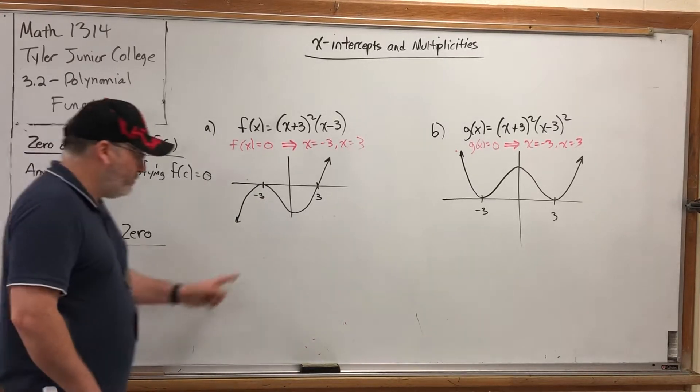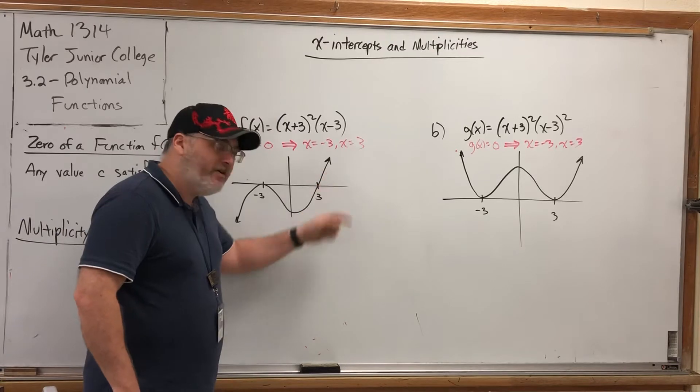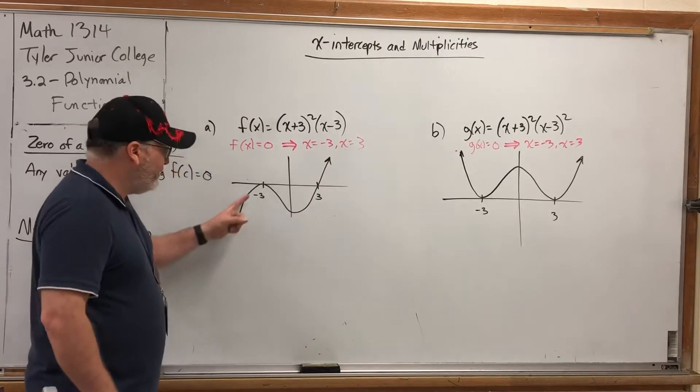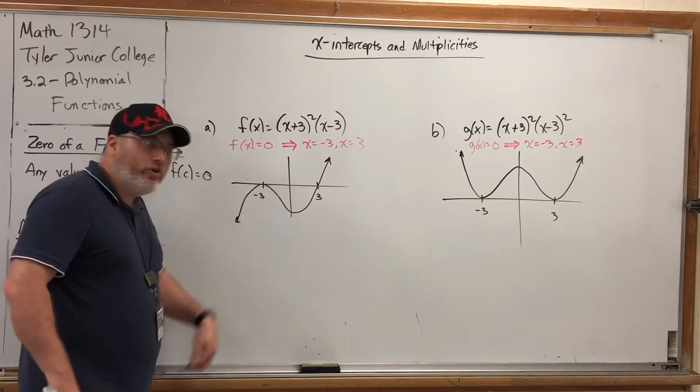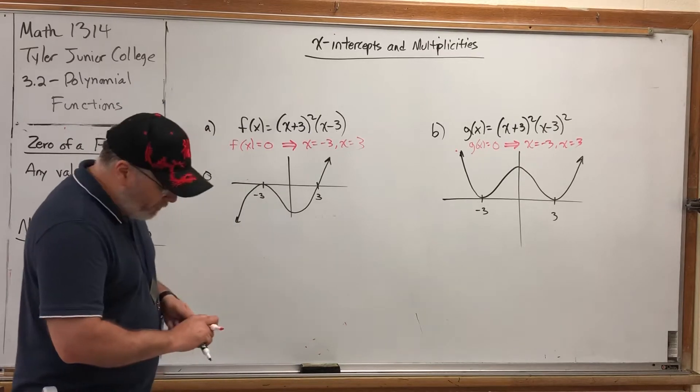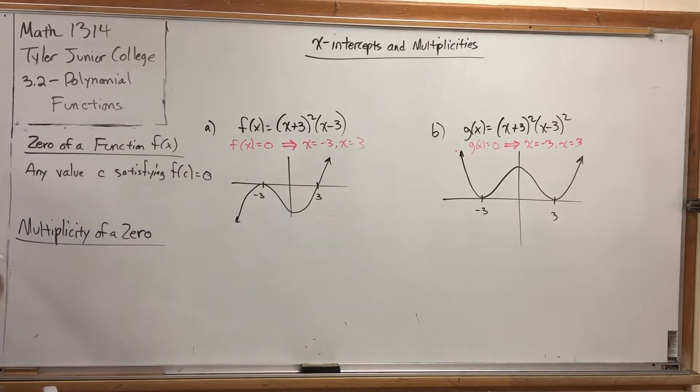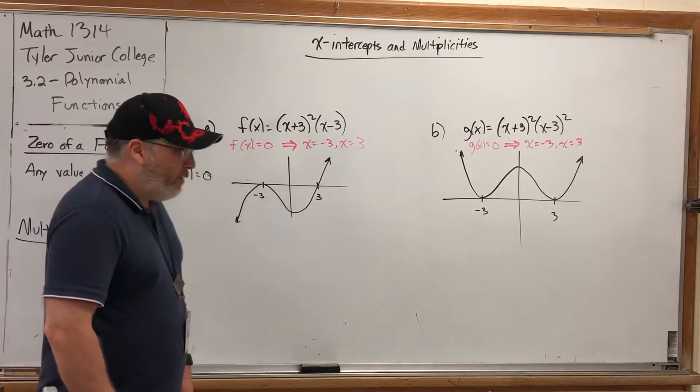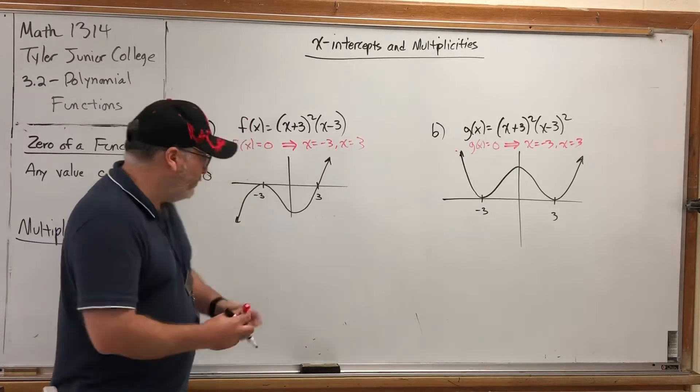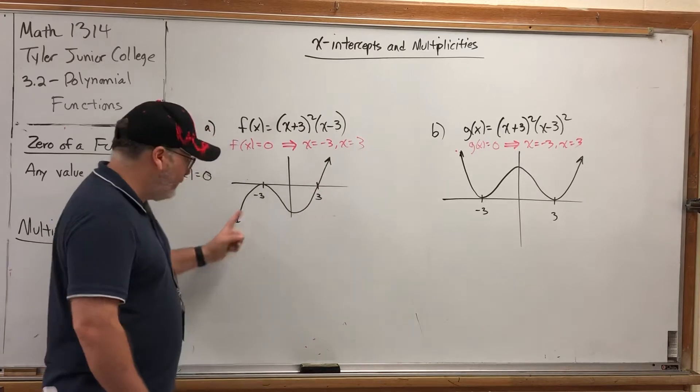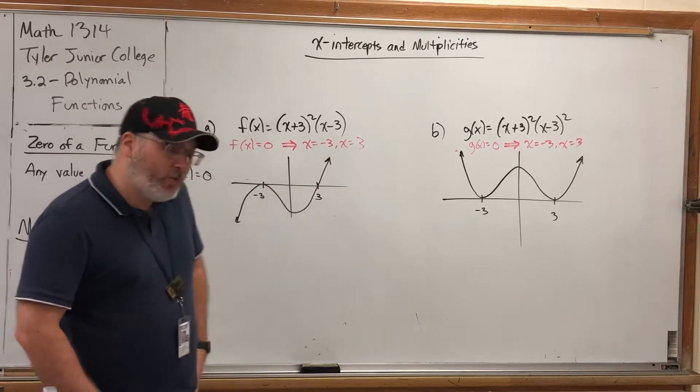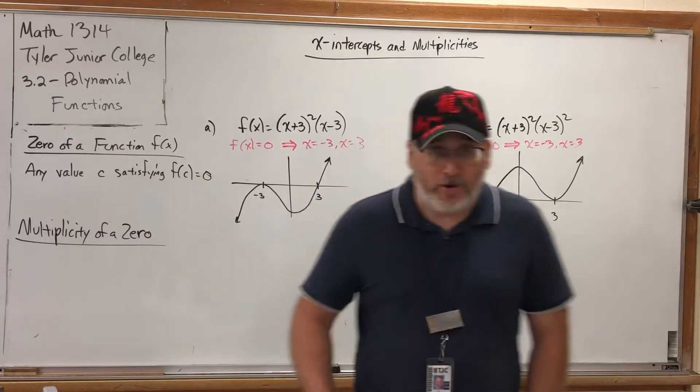So we had the same X-Intercepts, but not all X-Intercepts behave the same. Sometimes X-Intercepts, you cross and go to the other side. Sometimes you're like, ah, never mind, you touch it and turn. And the question we were left with at the end of the previous video was can we predict in advance when the behavior of an X-Intercept is to cross as opposed to touch and turn? And the answer is, of course there is. Otherwise I wouldn't have brought it up.